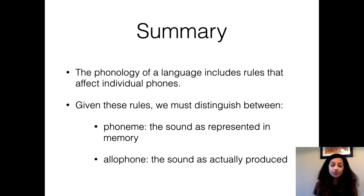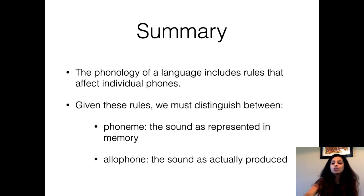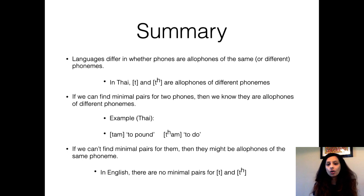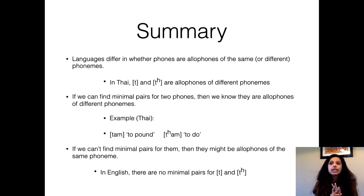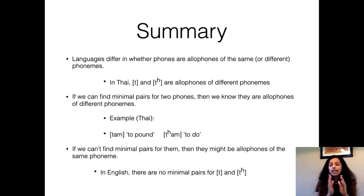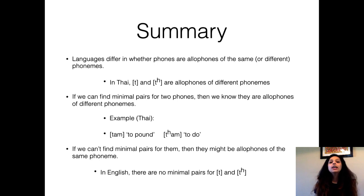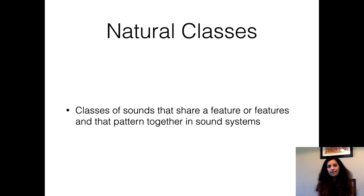To summarize what we've talked about in this lecture: a phoneme is a sound as represented in the speaker's memory, and an allophone is a sound as it is actually produced by the speaker. We looked at data from both Thai and English and saw that languages can differ in how they divide allophones and phonemes. In Thai, aspirated and non-aspirated are allophones of different phonemes, but in English they are allophones of the same phoneme because meaning does not change.